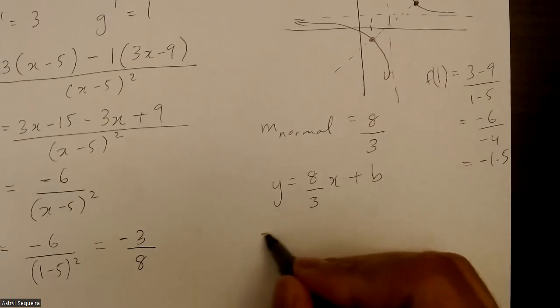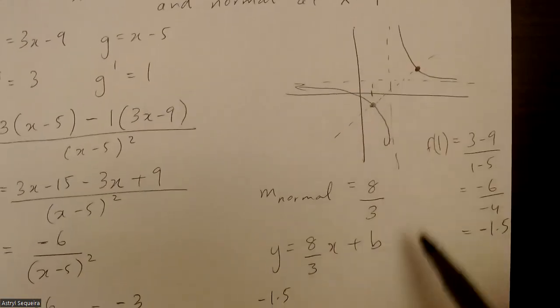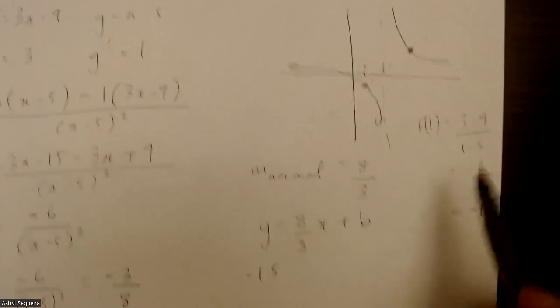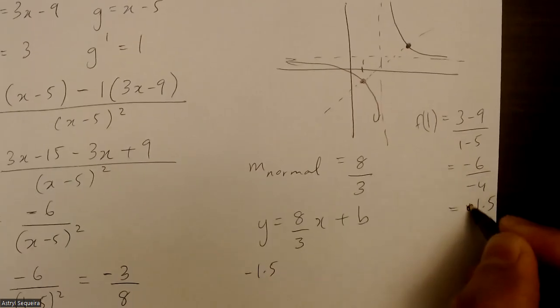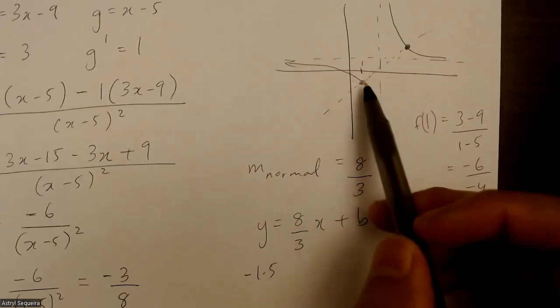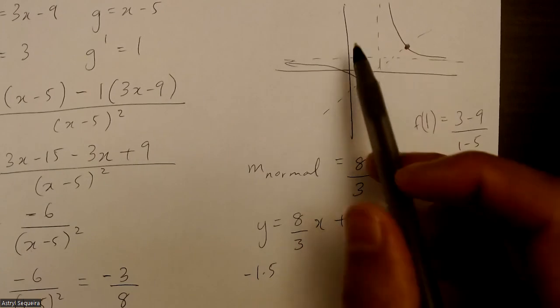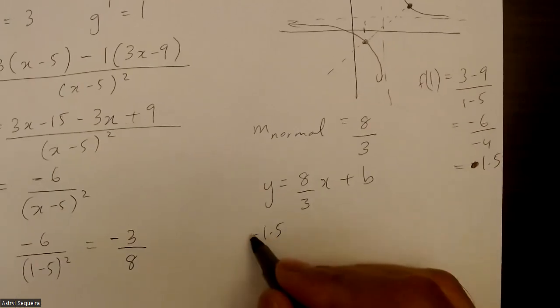So I know negative 1.5. So this graph, oh sorry, positive 1.5. This graph is not 100% accurate. It's actually slightly higher at that point, but that doesn't matter.